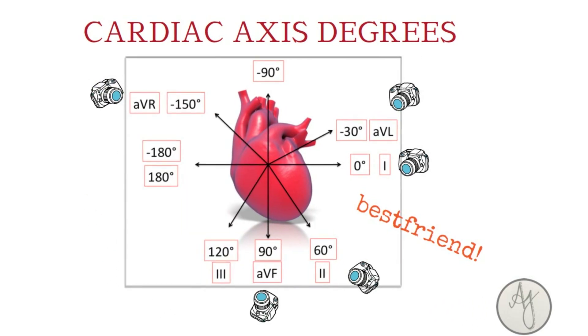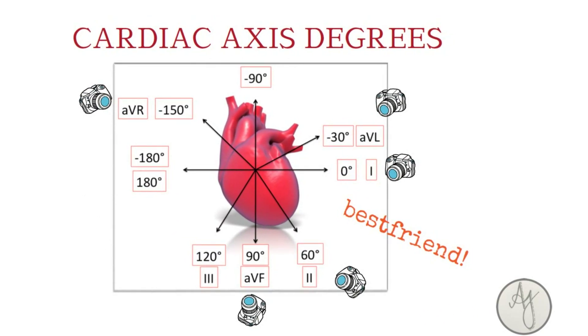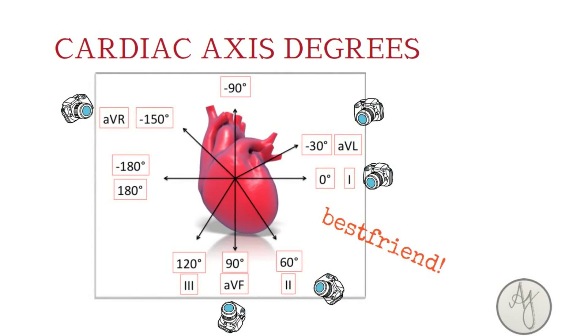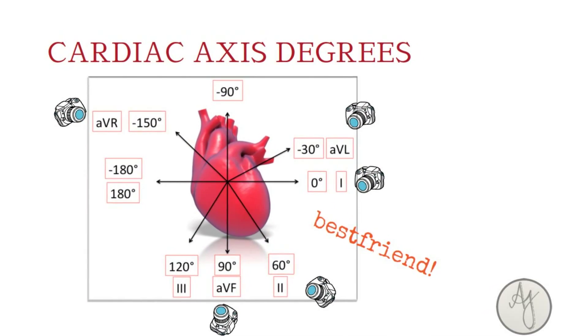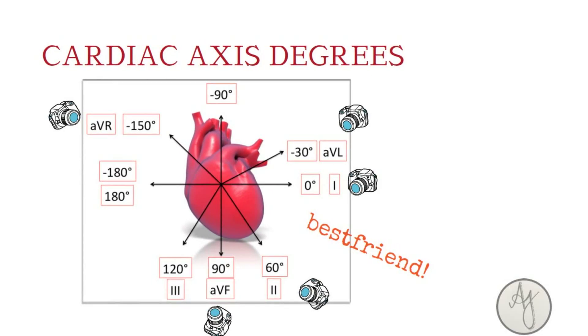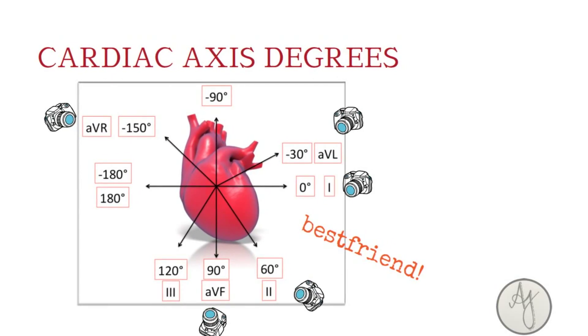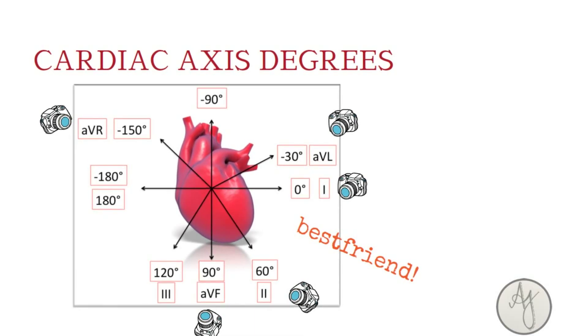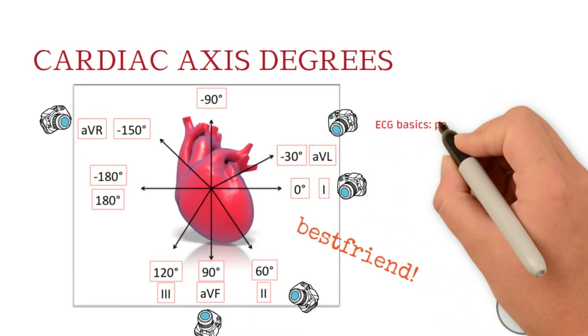So here we don't worry about the chest leads. Axis is all about just the limb leads, so let's just forget the chest leads. If you guys don't know what this leads thing I am talking about, please watch my ECG basics part two where I talk about unipolar and bipolar leads.